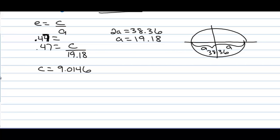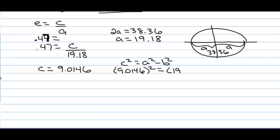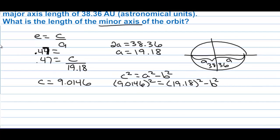We use the ellipse relationship: c squared equals a squared minus b squared. So 9.0146 squared equals 19.18 squared minus b squared. Solving: 9.0146 squared minus 19.18 squared equals approximately negative 286.609, which equals negative b squared.